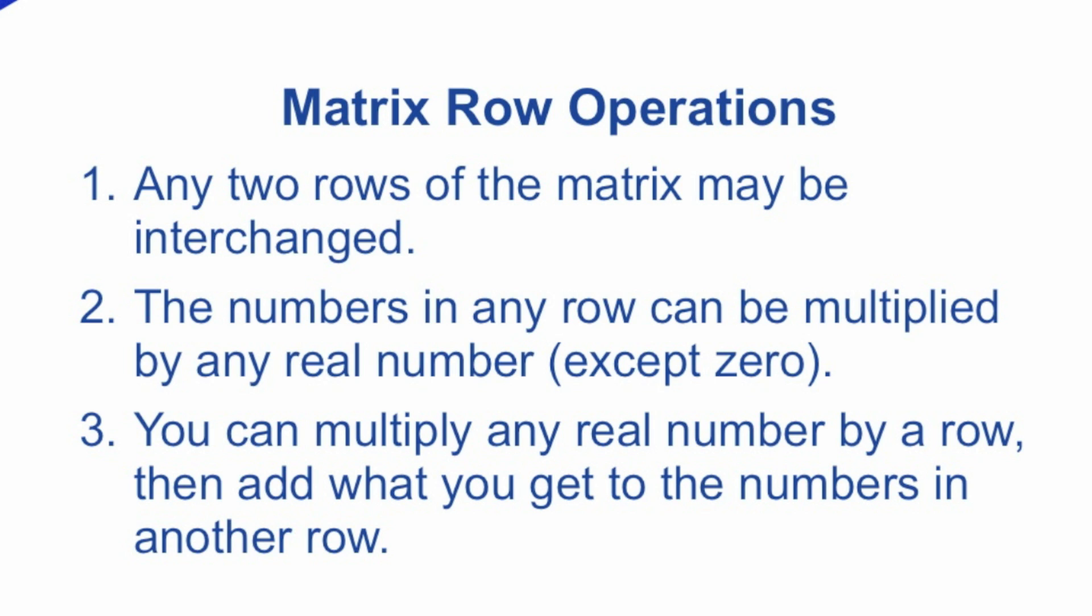First, any two rows of the matrix can be interchanged. Second, the numbers in any row can be multiplied by any real number except for zero. And third, we can multiply any real number by a row, then add what we get to the numbers in another row. This will make more sense once we see an example.